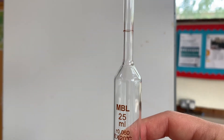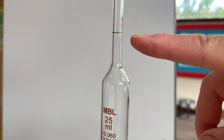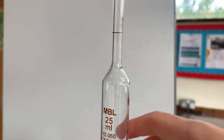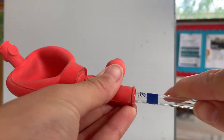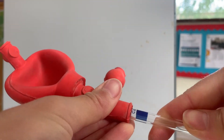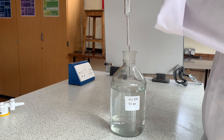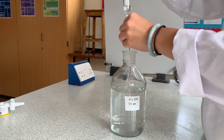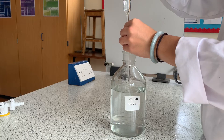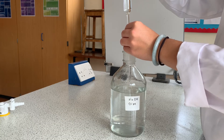You should fill the liquid up to the line on the pipette using a pipette filler. This should be placed on very carefully to avoid accidents with the fragile glass. Here I am filling the pipette with 0.1 molar sodium hydroxide solution.